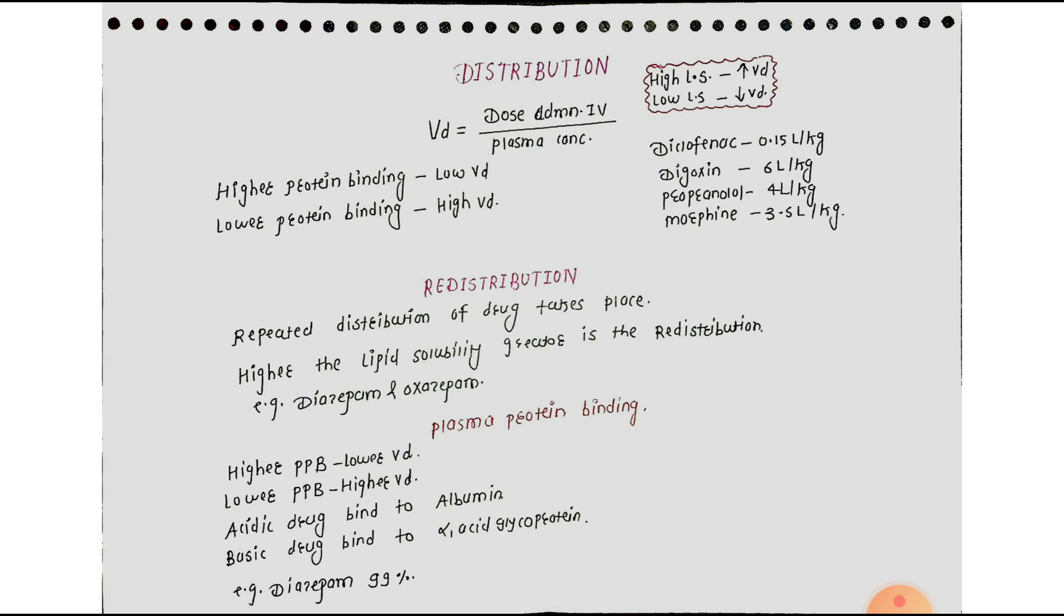Now, most important, plasma protein binding, which we must love. High plasma protein binding, lower Volume of Distribution. We have already seen about it.